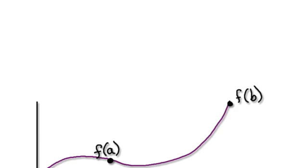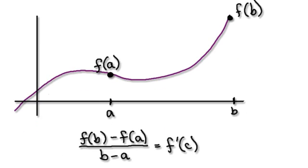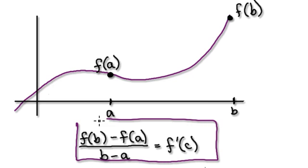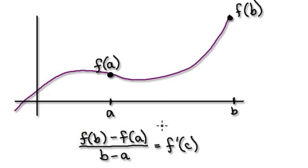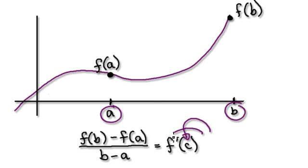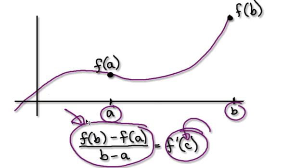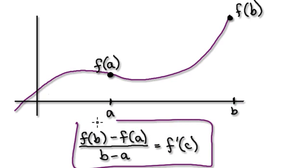In this video, we're going to use the mean value theorem to deduce something about a graph. You won't fully understand this until you see some examples, so watch this through and then watch some examples. This here is our mean value theorem. We are going to use this to deduce something about a graph.